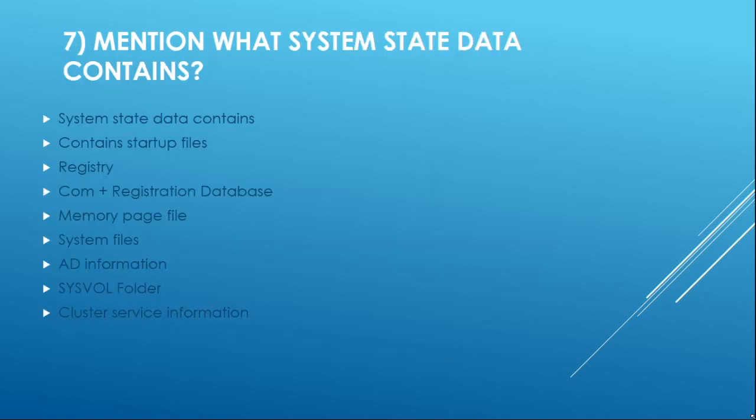Question 7: What does system state data contain? System state data contains: startup files, Registry, COM+ registration database, memory page file, system files, AD information, SysVol folder, and cluster service information.